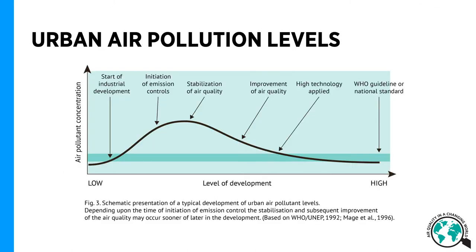Here is a schematic presentation of a typical development of urban air pollution levels. In the beginning of industrial development processes, urban pollution concentrations rise. As a result, emission controls are initiated that aim to curb air pollution. This eventually leads to the stabilization of air quality and slowly to the improvement of air quality as higher technology is applied. Most cities are considered to follow this type of development, which eventually leads to stabilization under the national standard or WHO guidelines.